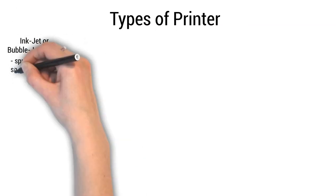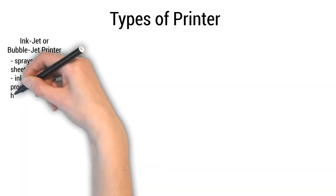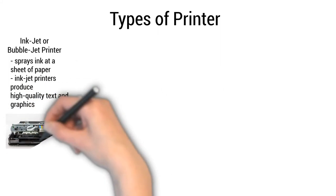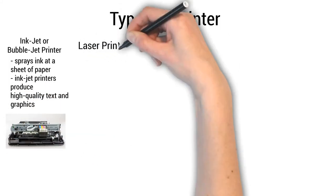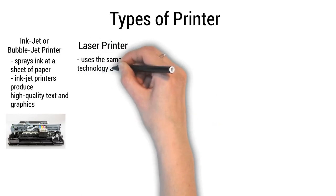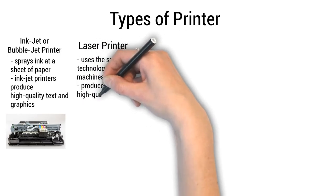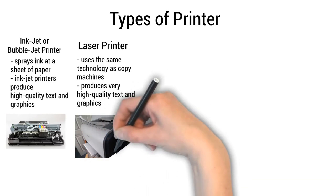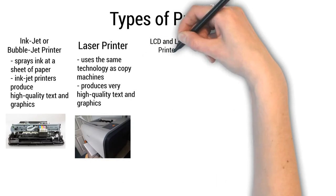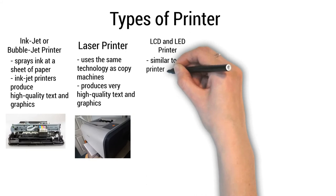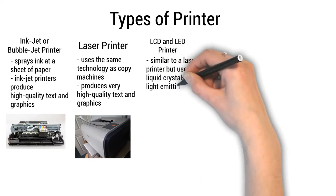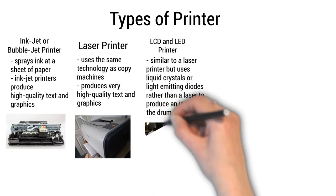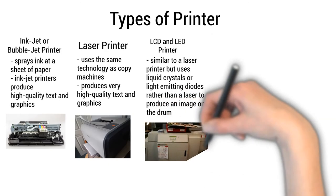Types of printers: An Inkjet or Bubblejet printer sprays ink at a sheet of paper and produces high-quality text and graphics. A Laser printer uses the same technology as copy machines and produces very high-quality text and graphics. An LCD and LED printer is similar to a laser printer but uses liquid crystals or light-emitting diodes rather than a laser to produce an image on the drum.